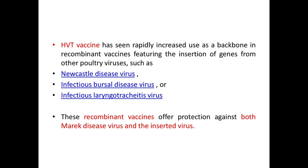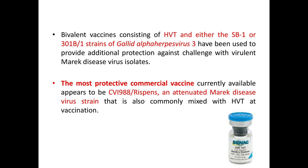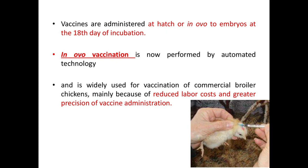HVT vaccine has seen rapidly increased use as a backbone in recombinant vaccines, featuring the insertion of genes from other poultry viruses such as Newcastle disease virus, Infectious Bursal disease virus, or Infectious Laryngotracheitis virus. These recombinant vaccines offer protection against both MDV and the inserted virus. Bivalent vaccines consisting of HVT and either the SB1 or 301B/1 strain of Gallid alphaherpesvirus 3 have been used to provide additional protection against challenge with virulent Marek's disease virus isolates. The most protective commercial vaccine currently available appears to be CV1988/Rispens, an attenuated MDV strain commonly mixed with HVT at vaccination.